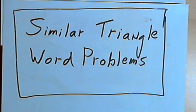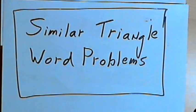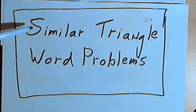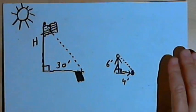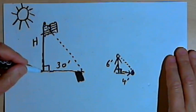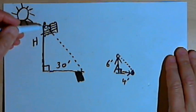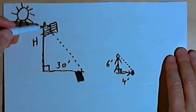This video is provided as supplementary material for courses taught at Howard Community College. In this video I'm going to do three word problems that are like the ones you typically run into when you're learning about similar triangles. So here's the first kind of problem — this one usually involves the height of an object, like a tree. In this case I'm going to use a flagpole.